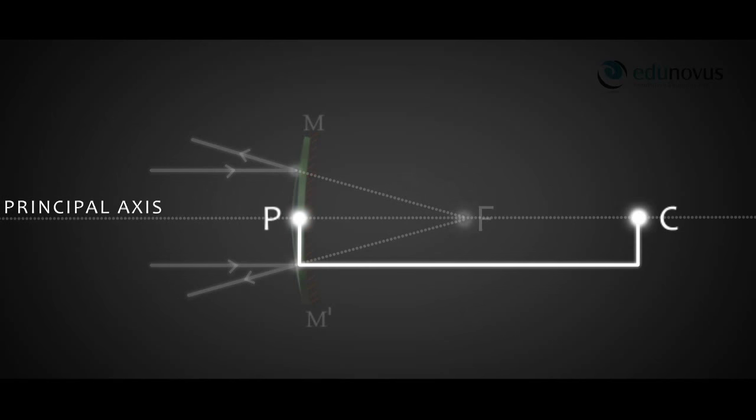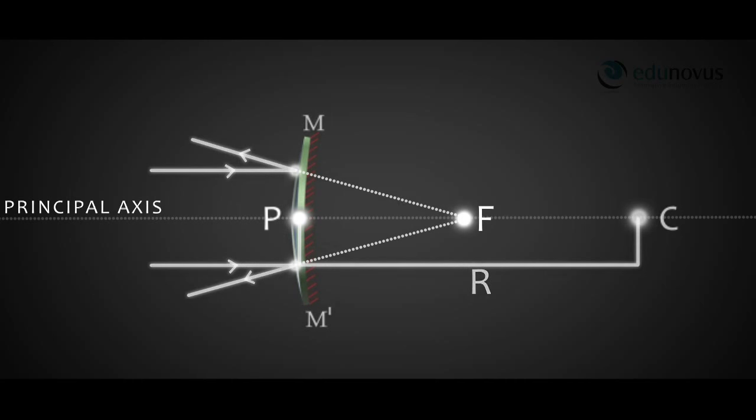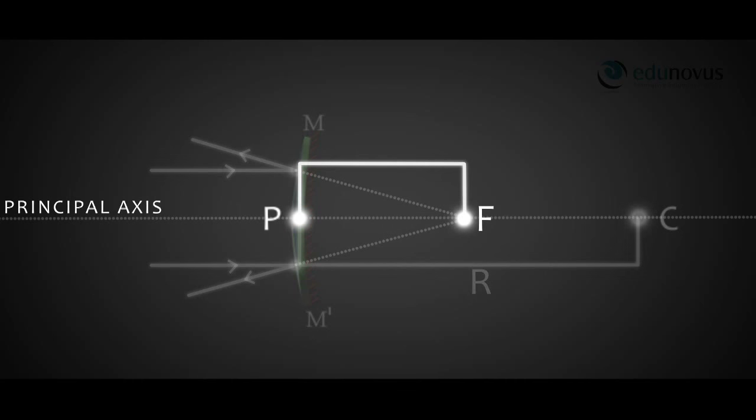The distance between the pole P and the centre of curvature C is called the radius of curvature, denoted by R. The distance between the pole P and the principal focus F is called the focal length of the mirror, denoted by f.